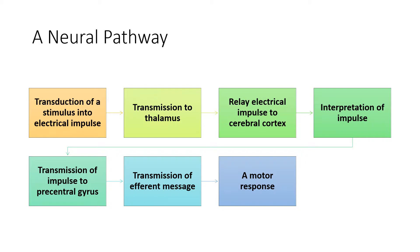This particular example involves the primary motor cortex, which is the precentral gyrus of the frontal lobe. The impulse is being transmitted to the primary motor cortex, and from there you get the transmission of the efferent message, which relays the signal away from the central nervous system towards the peripheral nervous system, where you then get a motor response. This would be the correct order of events along the neural pathway—make sure to note that in your prelab.